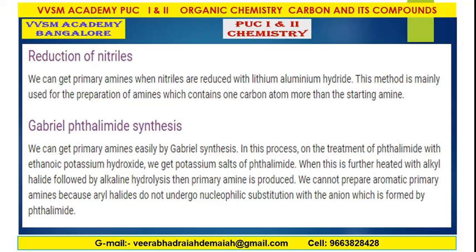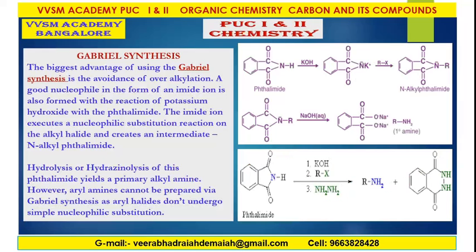We cannot prepare aromatic primary amines because aryl halides do not undergo nucleophilic substitution reaction with the anion formed by phthalimide. The biggest advantage of using Gabriel synthesis is the avoidance of over-alkylation. A good nucleophile in the form of an imide ion is also formed by the reaction of potassium hydroxide with phthalimide.